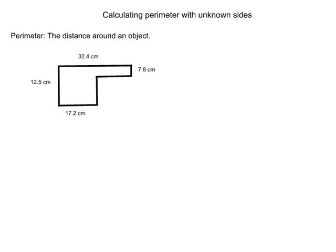We are given an object here. It's a six-sided object. However, we are only given four dimensions. This first side is 32.4 centimeters, this side is 7.8 centimeters, the bottom is 17.2 centimeters, and the other side is 12.5 centimeters.